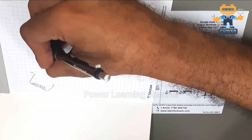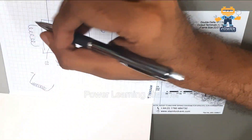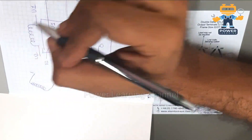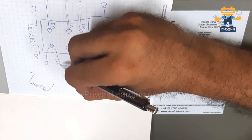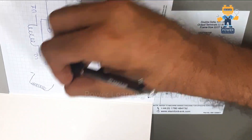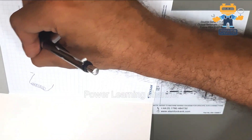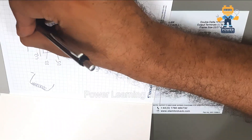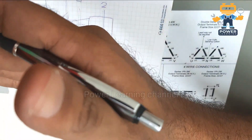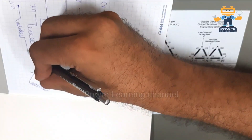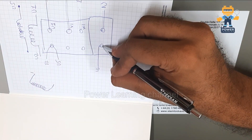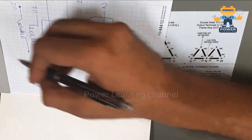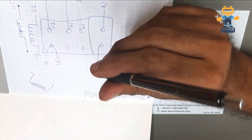Let me show you the winding physically. This is one coil: one end is u1 and the other side is u2. The other winding is u5 and u6. We connect u2 with u5, so these are connected in series — they come out from inside the alternator and are joined at the terminal.